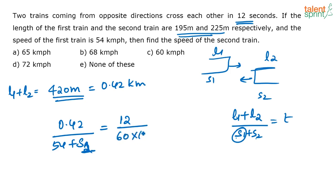So this is 12 by 60 into 60. See, 12 seconds is 12 by 60 minutes. How many hours will that be? Divide by 60. So 12 by 60 into 60 hours this will be.